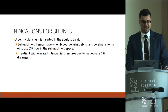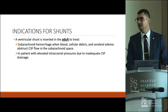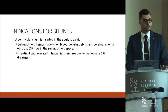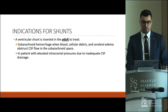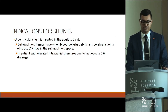In adults, the list is shorter: subarachnoid hemorrhage, blood, edema, and cellular debris can cause obstruction of normal CSF flow. Patients with elevated intracranial pressure from trauma or other causes could have blocked CSF drainage, making a shunt an appropriate indication.